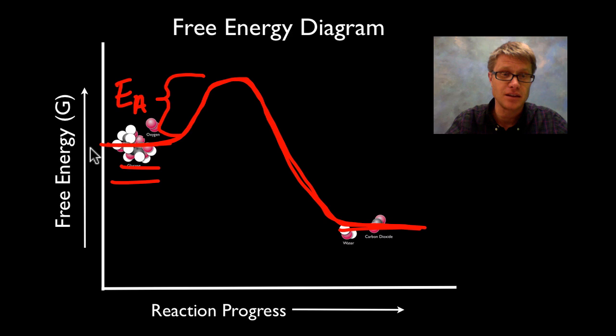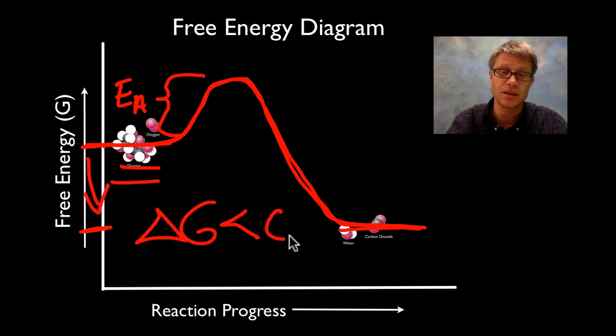If you look at that net change from free energy here to free energy here, you can see that there's a decrease in that. The delta G is going to be less than zero. That's an exergonic reaction.